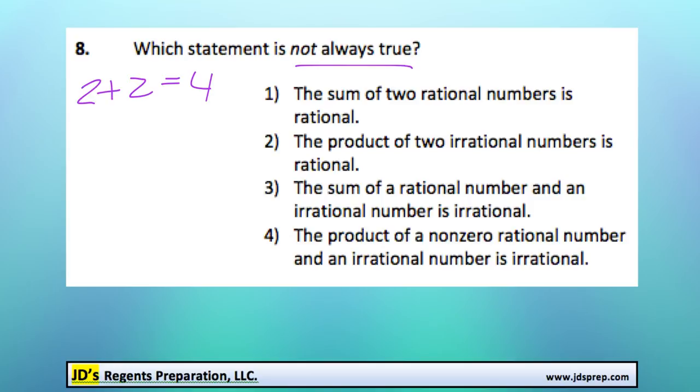The second one, the product of two irrational numbers is rational. Now, I can tell right away there's an issue with that. You could multiply some irrational numbers, like root 2 times root 2. And that would get you an irrational number.